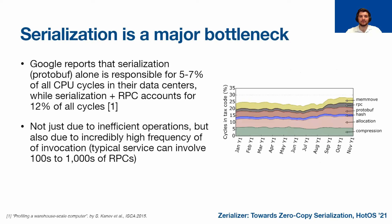Serialization is, in fact, a major performance bottleneck. Google reports that serialization alone is responsible for five to seven percent of all CPU cycles in their data centers. And once you factor in the associated RPC cost, this is 12 percent of all cycles in the data center. This is a pretty large slice of data center performance. This bottleneck is not entirely due to inefficiency in the operations, but it's actually just the incredibly high frequency of serialization, where typical servers can involve hundreds to thousands of RPCs. As network speeds reach or exceed 100 gigabits per second and common operations start completing in microseconds, serialization becomes more and more of a major source of overhead.